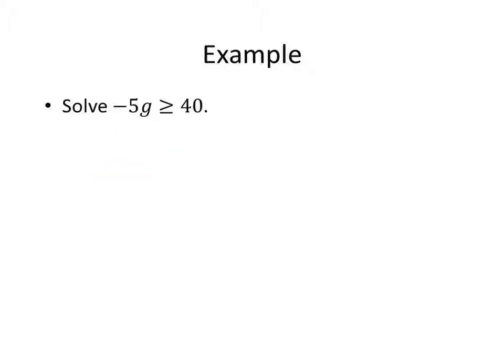Last one — pause the video and make sure you can do it. I got G is less than or equal to negative 8. Remember to switch your inequality because you're dividing by a negative. That's what 6-2 is about — just remember the main difference: if you divide or multiply by a negative, you have to flip your inequality. Let me know if you have any questions. We'll see you later.